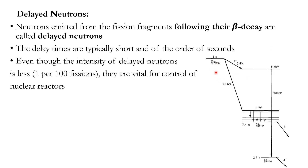An example of delayed neutron production: bromine-93 is one fission fragment of uranium-235. By beta-minus decay it becomes strontium-93. This strontium-93 is in an excited state with high energy, and it emits a neutron, coming down to strontium-92. This neutron is produced approximately six seconds after the nuclear fission.